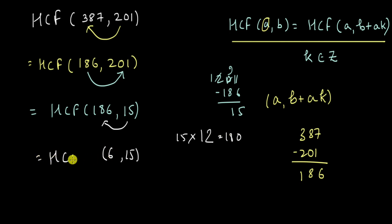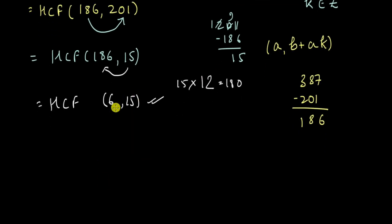So HCF of 6 and 15 is the same as HCF of 387 and 201. Are you kidding me? This huge these huge numbers have been reduced to such small numbers.